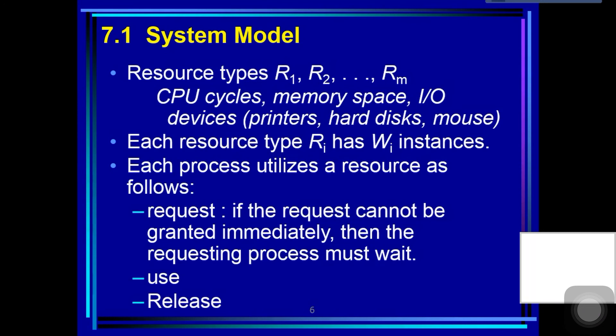The events we are mainly concerned with here are resource acquisition and release. Resources may be either physical resources, such as printers, tape drives, memory space, and CPU cycles, or logical resources, such as semaphores, mutex locks, and files. However, other types of events may result in deadlocks.